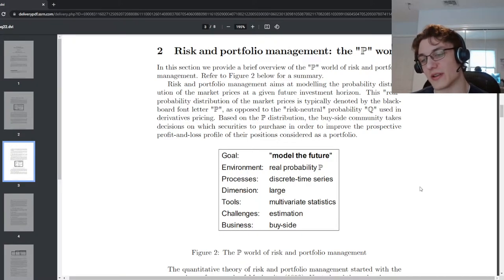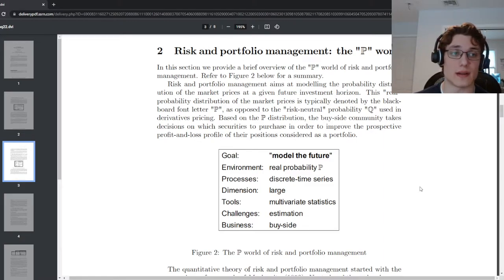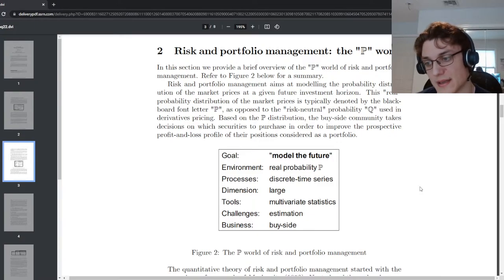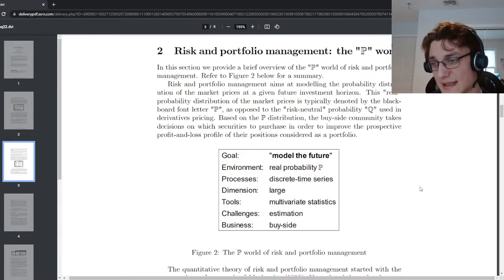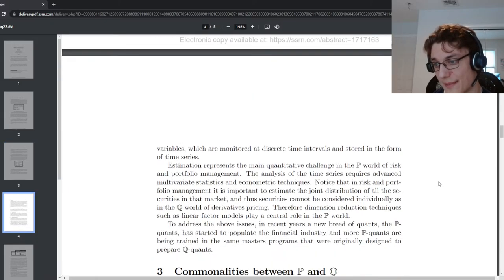So these are all things that we have to take into account in the P world. So the dimensionality is generally large. You're dealing with enormous cross sections of multiple assets. It's like you'd be looking at a basket of like 500 to 1,000 equities if you're trying to derive some equity alpha and then it's a time series. So you have an incredibly large dimensionality in the space. You use tools from multivariate statistics. You're going to use your autocorrelations or just really classical tools from statistics. The challenge is estimation. And the business is really the buy side. So more of the risk management, prop trading style stuff.